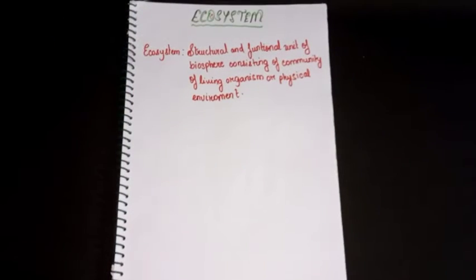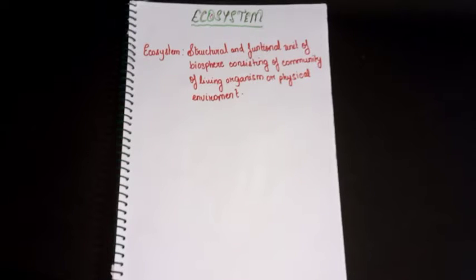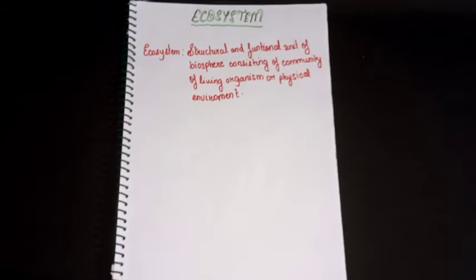So now let's go to the basic knowledge of ecosystem. An ecosystem includes all the living things — plants, animals, and even organisms like bacteria and fungi — in a given area, interacting with each other and with non-living things as well.